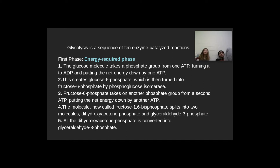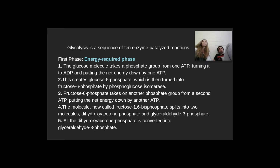The glucose takes two phosphate groups from two ATP, converting them to ADP. It then becomes glyceraldehyde-3-phosphate, or G3P. One molecule is originally G3P, and the other converts into G3P as well. So we end up with two G3P at the end of this phase.